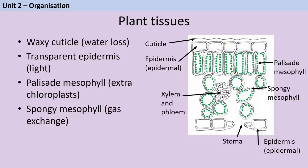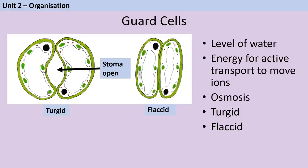Each stoma is surrounded on both sides by a pair of guard cells. Guard cells are responsible for keeping a particular stoma open or closed based on how well hydrated the plant is. When there's a lot of water available, the plant uses energy and active transport to pump ions into the guard cells, causing water to move in by osmosis — the cells become turgid and the stoma opens. When there's less water available, water moves out of the guard cells and they become flaccid and shrunken, the stoma pore closes, preventing further transpiration and stopping the plant from getting more dehydrated.